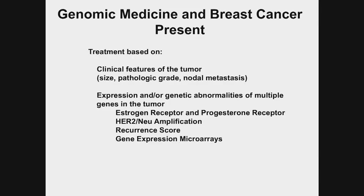Both of these examples involve looking at one gene at a time in the patient's tumor, and that's really not where we are today. We still use clinical features. We still use individual genes — estrogen receptor, progesterone receptor, and HER2-neu amplification — as measures of prognosis and of what would be the most effective treatments. But we've also started to incorporate more global genomic measures of tumor prognosis and predictive measures of therapies. I'm going to talk about two today: the recurrence score and gene expression microarrays.